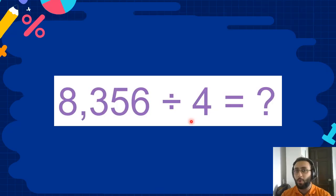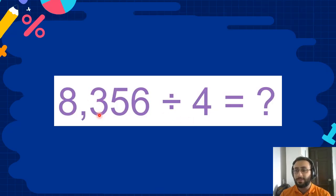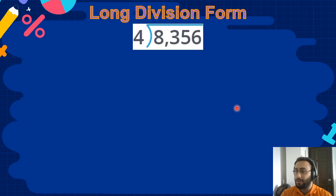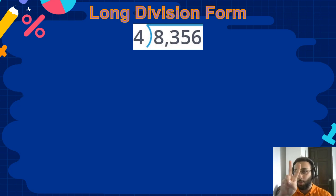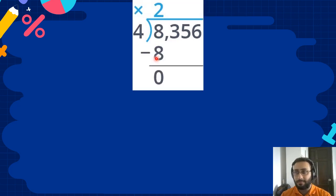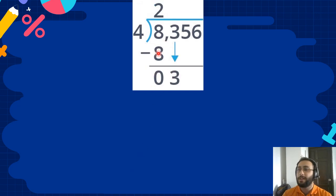Now let's look at this one. 2 times 4 is 8. 8 minus 8 is 0. Now we bring the next digit down — 3, come over here.